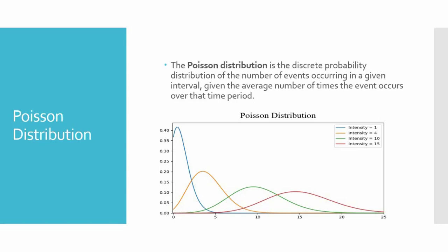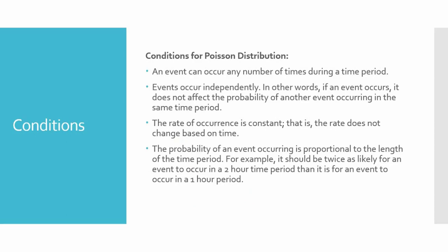The Poisson distribution follows a curve something like this, and we can see a Poisson distribution when certain conditions are met. An event can occur any number of times during a time period, so it can be zero to infinity, any number of times.